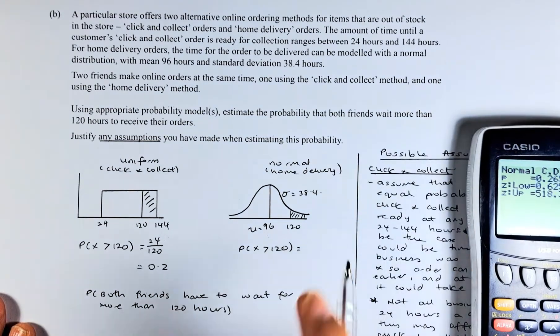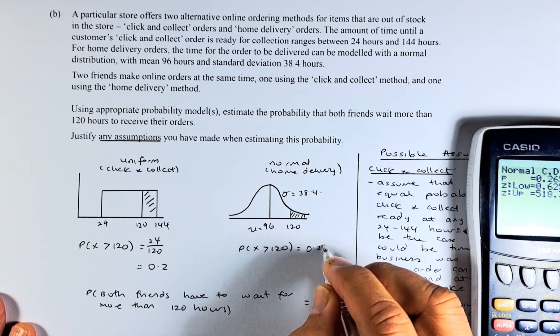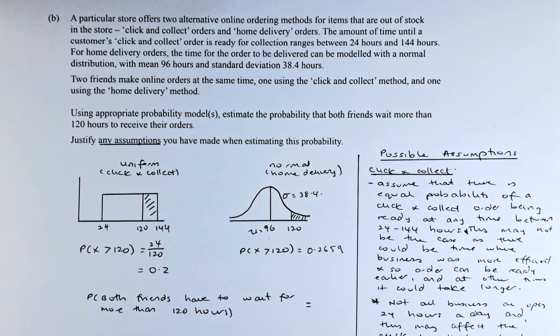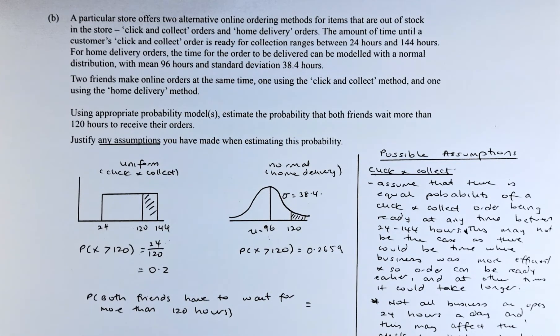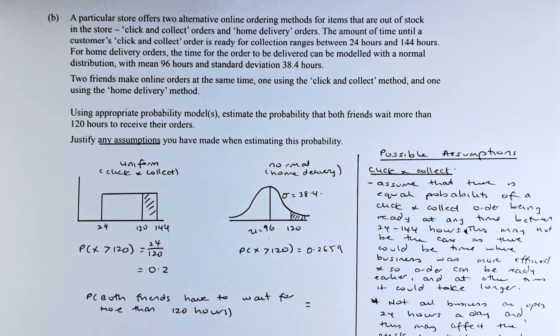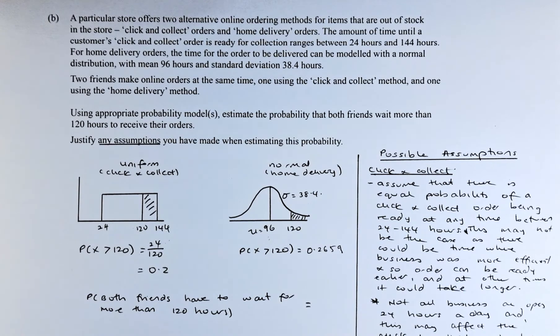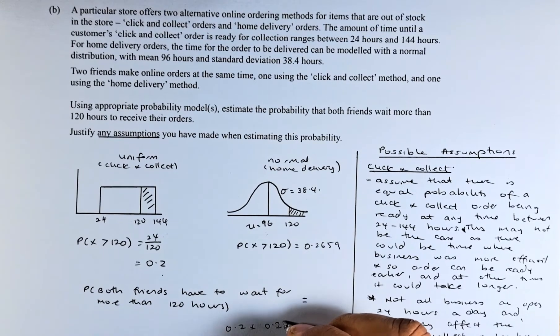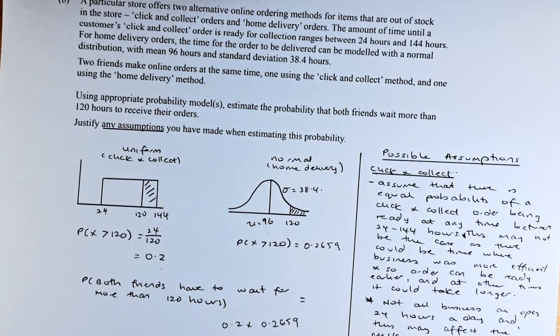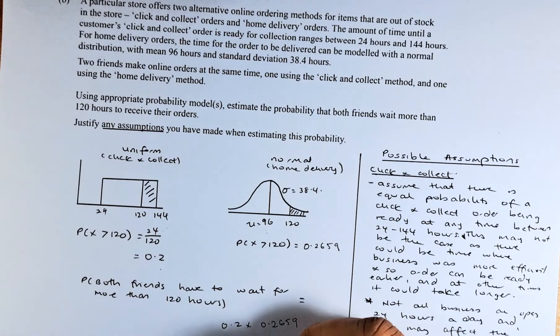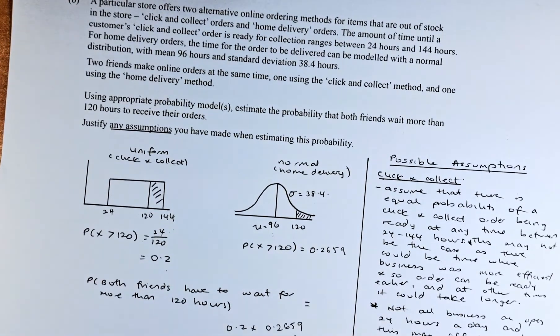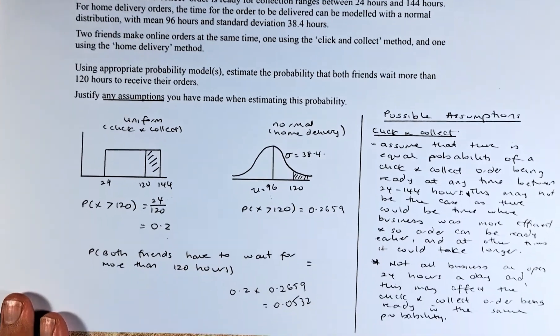To calculate that both friends have a probability that is more than 120 hours, we are going to multiply the two numbers together. When we multiply the two numbers together, 0.2 multiply by 0.2659, put in your calculator, and the answer is going to be 0.0532.